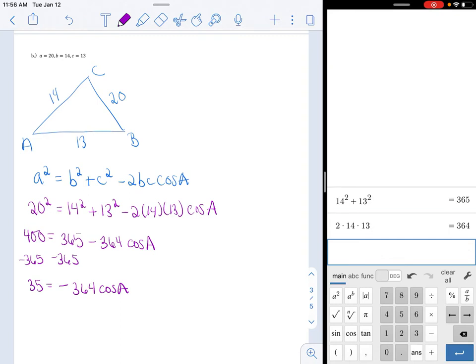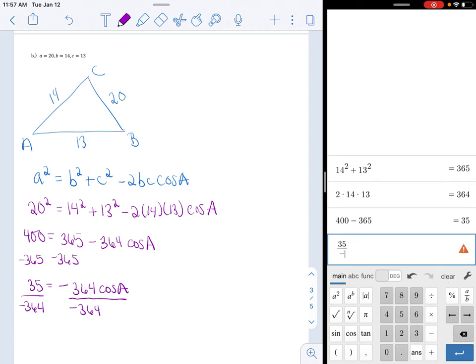400 take away 365 is 35, and then that equals negative 364 cosine A. Okay, watch those negatives, and so now I have to divide both sides by negative 364. So I do 35 divided by negative 364. So I get negative 0.0,